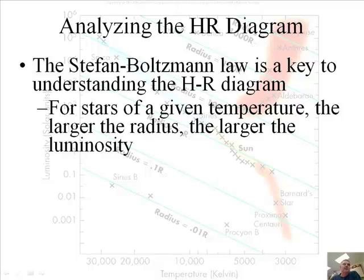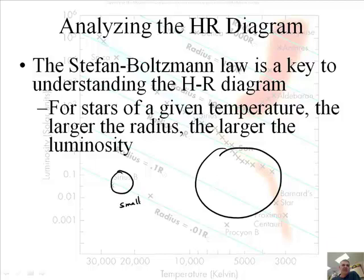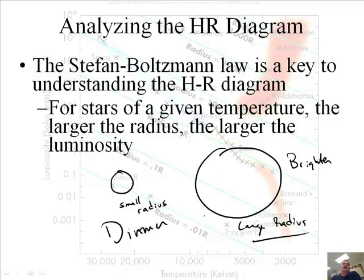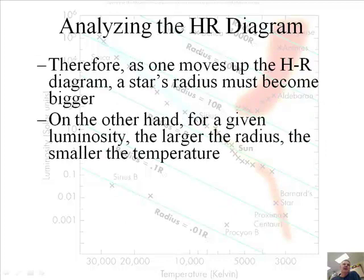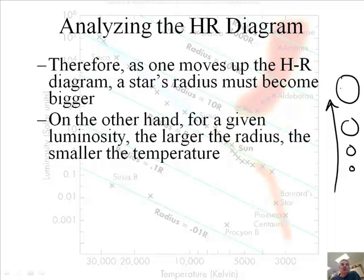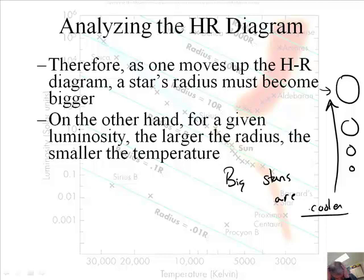Let's talk about something called the Stefan-Boltzmann law — it's a key to understanding the HR diagram. For stars of a given temperature, the larger the radius, the larger the luminosity. That means if I have a small star versus a big star: the larger ones are brighter and the smaller ones are dimmer. That's a key concept. Therefore, as one moves up the HR diagram, a star's radius must become bigger — going from small to bigger to bigger. On the other hand, for a given luminosity, the larger the radius, the smaller the temperature — big stars tend to be cooler.